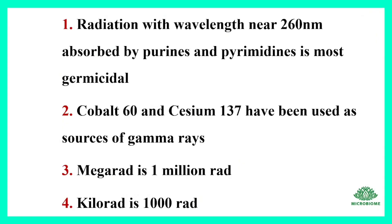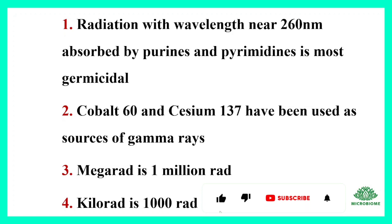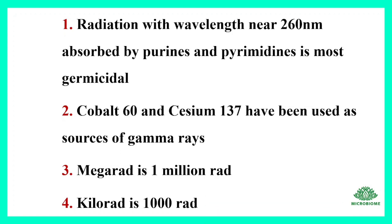Radiation with wavelength near 260 nanometers, absorbed by purines and pyrimidines, is most germicidal. Cobalt-60 and Cesium-137 have been used as sources of gamma rays.